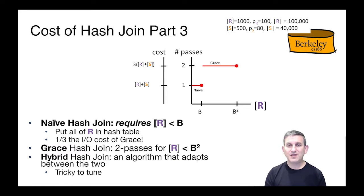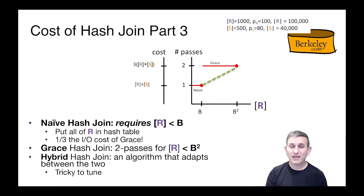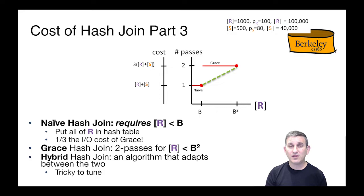The question is whether we can get something smoother than just switching from naive to grace when R exceeds B. There is such an algorithm called hybrid hash join, which smoothly interpolates between the two. However, it's a bit tricky to tune — it makes assumptions about key distributions that make it somewhat unreliable. Hybrid hash join is very interesting and often taught, but less often used in practice. We won't cover it in this class, but you can read about it on the web or in the original research papers.